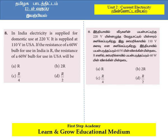I am going to read the question in both languages and then discuss the answer in both. The question in English: In India, electricity is supplied for domestic use at 220 volts. It is supplied at 110 volts in USA. If the resistance of a 60-watt bulb for use in India is R, the resistance of a 60-watt bulb for use in USA will be what?